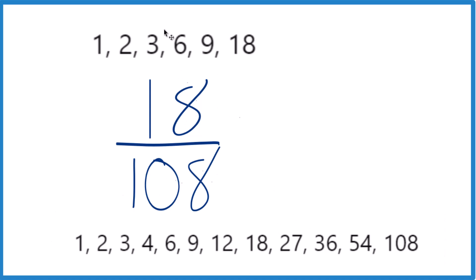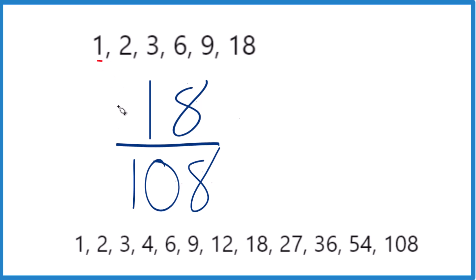And what we want to do is find a factor they have in common, the greatest common factor. So let's see. We have 1 that's in common, 2, 3 is in common, 6, 9 is in common, and then 18 is in common. And that's the greatest common factor, 18.